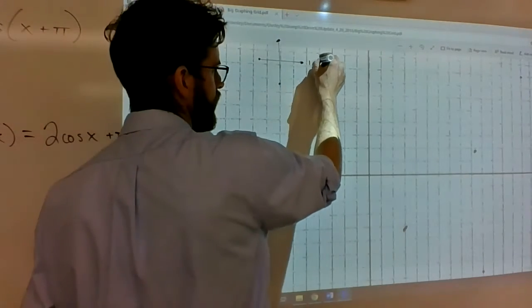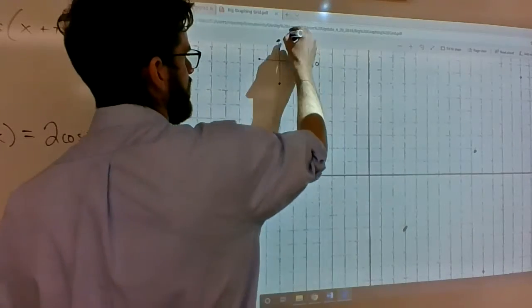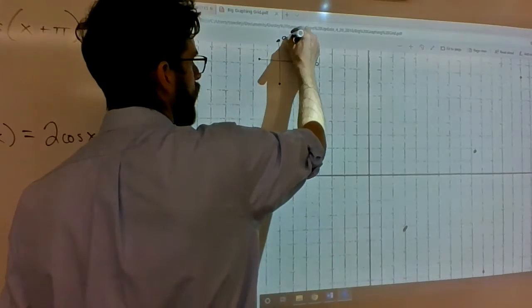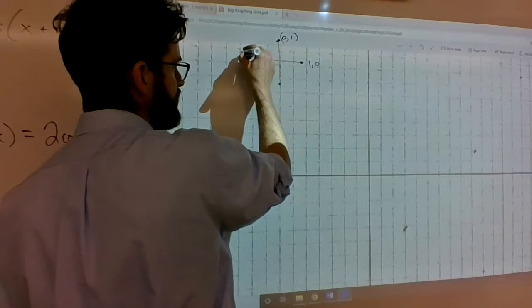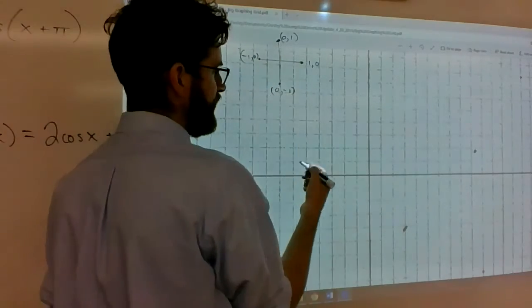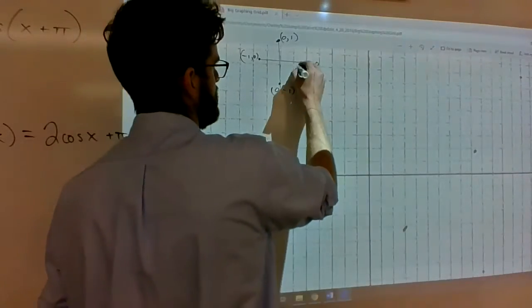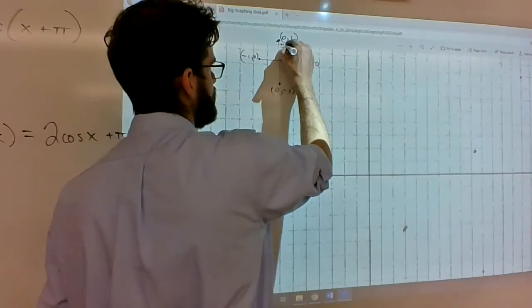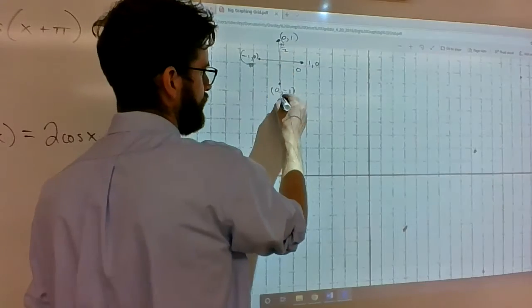So this is the point at 0 radians. This is the point 0,1 at π/2 radians. This is negative 1, 0 at π radians. And this is 0, negative 1 at 3π/2 radians. So 0, π/2, π, 3π/2.